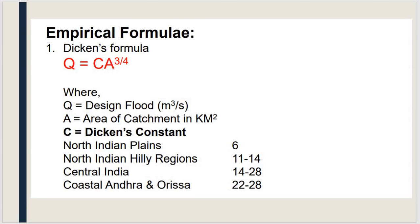The first method is empirical formulas. Under this, the first formula is Dickens formula, developed by certain scientists. Dickens formula is: Q = C × A^(3/4), where Q is the design flood.